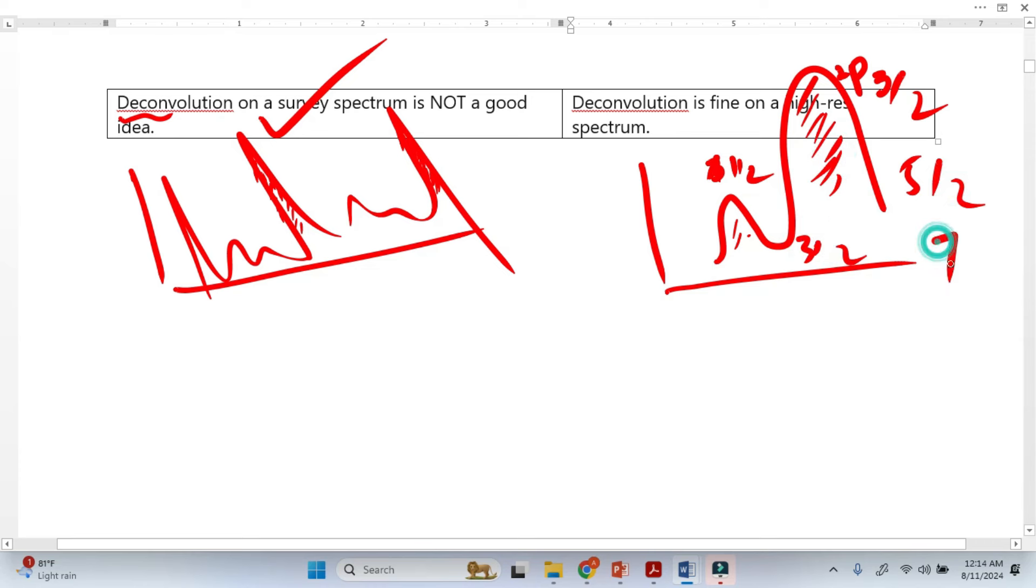If it is from f, we have 7/2 here and f 5/2 here. This is how deconvolution is fine on a high resolution spectrum.